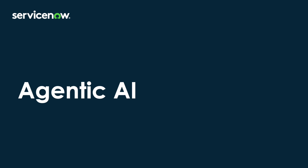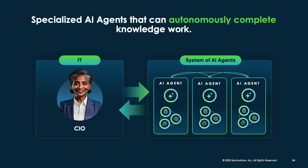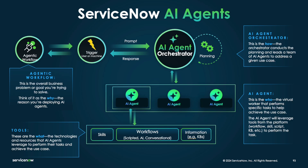Hello and welcome to today's overview of agentic AI in ITSM. AI agents are autonomous units of digital labor. IT CIOs can now rely on systems of these AI agents to complete their work more productively and more effectively, driving outcomes like resilience, employee experience, and agent productivity.